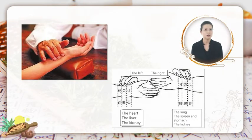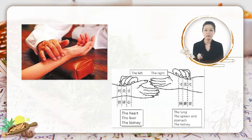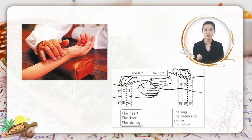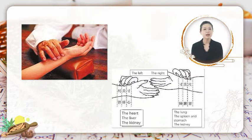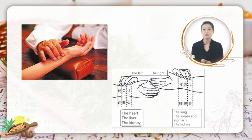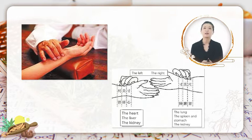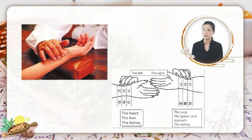For example, on the left hand, from the different positions, the pulse can indicate the heart, the liver, and the kidney. While on the right hand, changes in the pulse manifestation at different positions can indicate the lung, the spleen and stomach, and the kidney. Therefore, when a TCM doctor takes pulse on a patient, more than counting the beats, he is detecting what is going on inside.